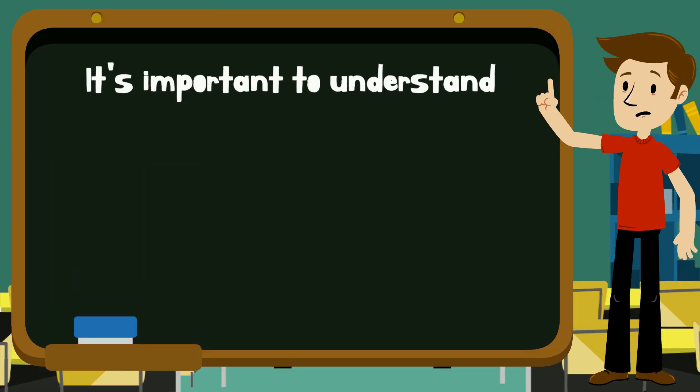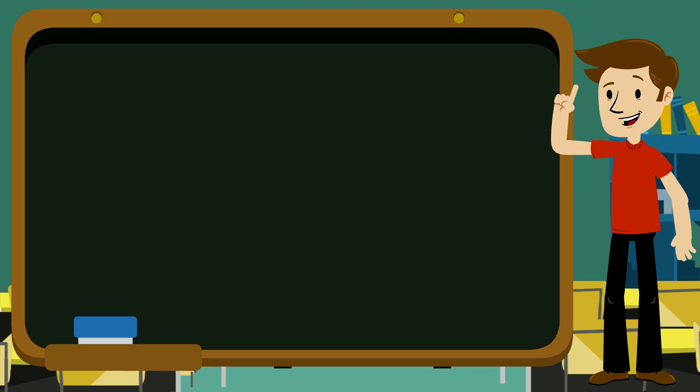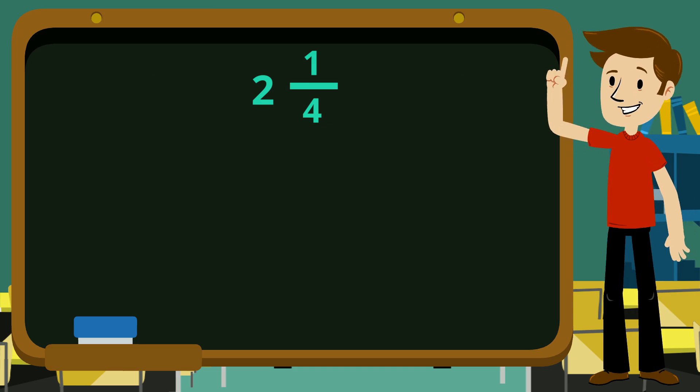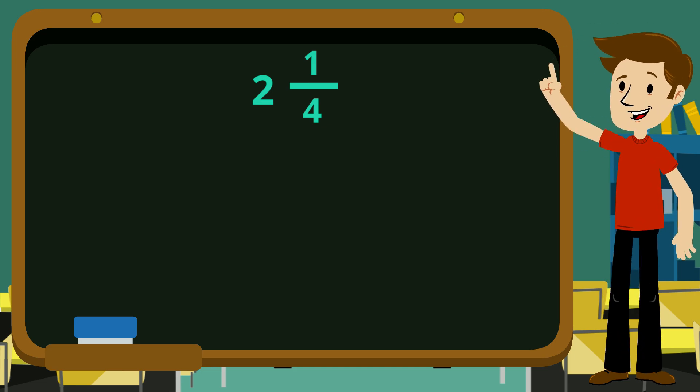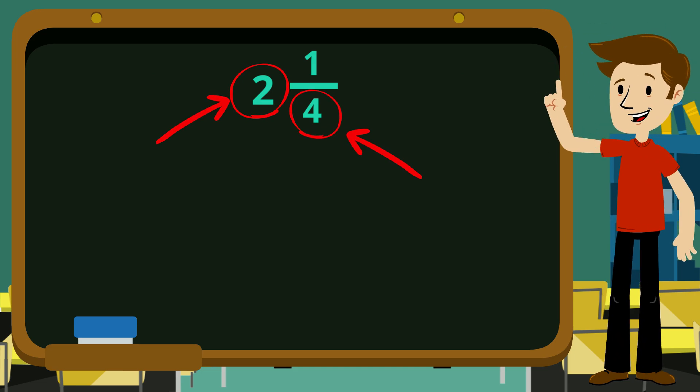It's important to understand why we follow these steps, so let's go back and take a closer look. Here is the mixed number we started with. Why did we multiply the whole part of the mixed number by the denominator?